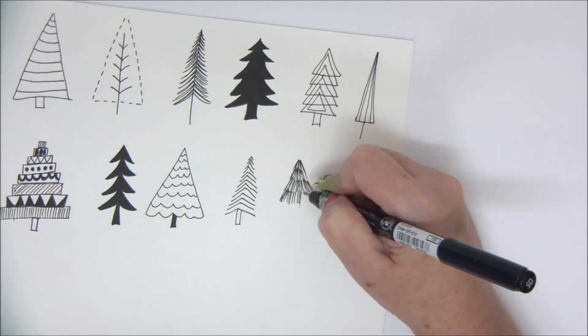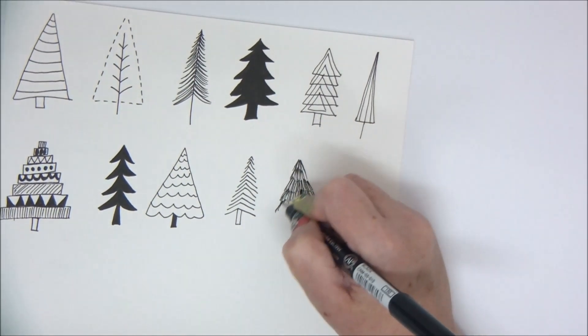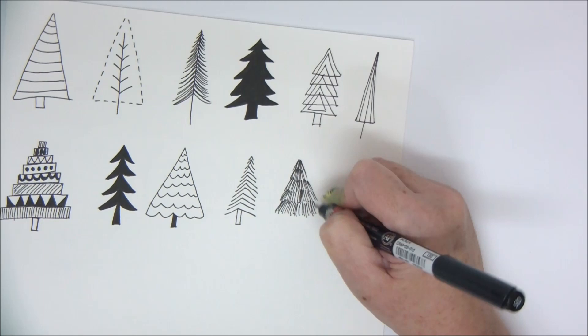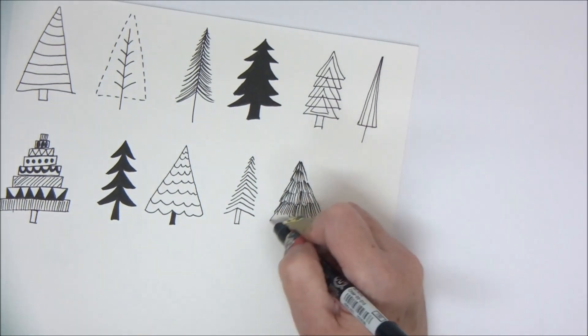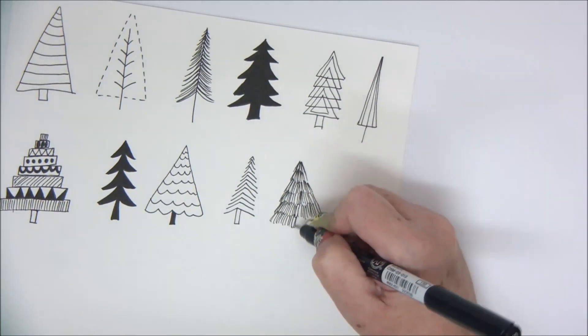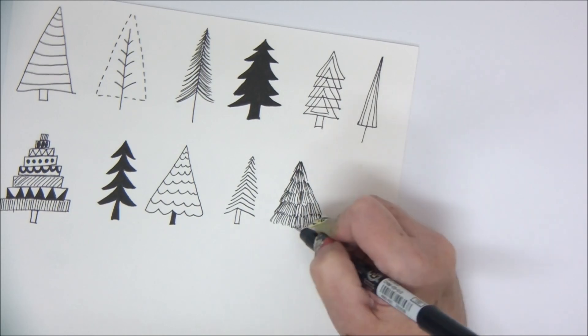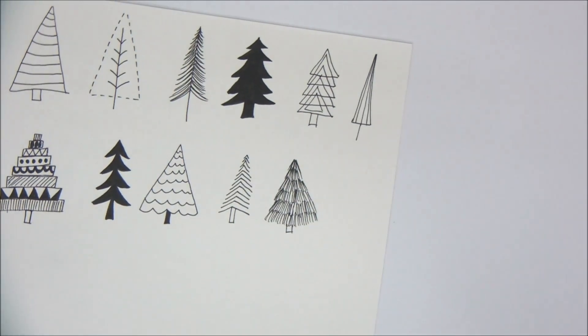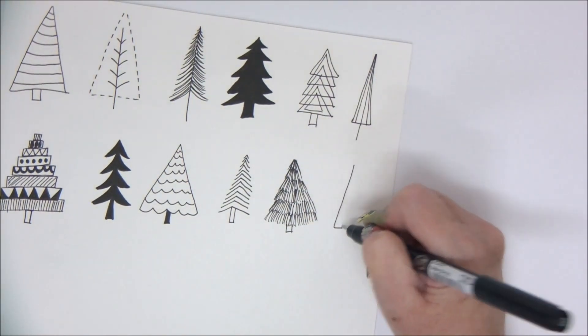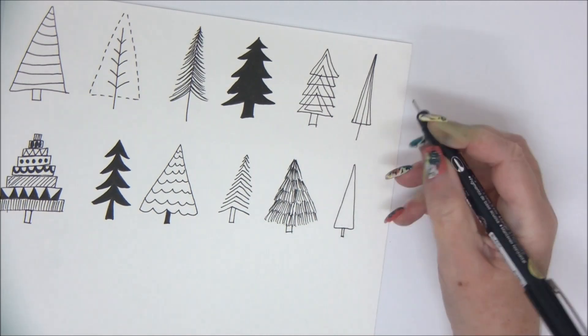That looks like needles on the tree, because Christmas trees have sort of needle-type leaves. So you can see you can have a really cool tree just by adding a few lines. Last one, let's make another narrow tree.